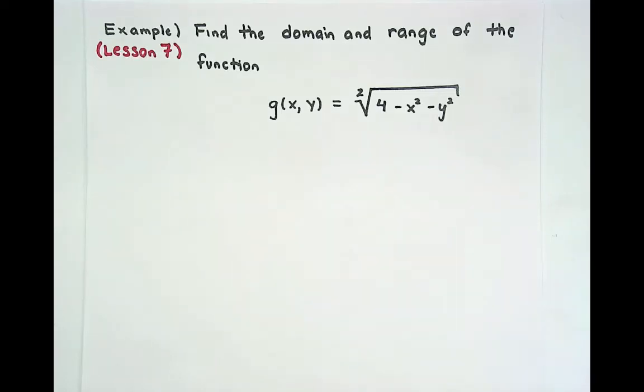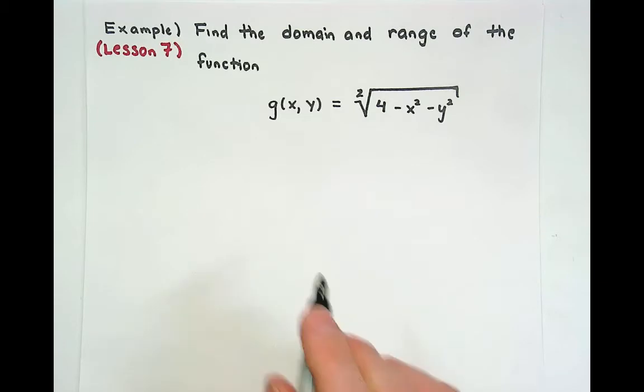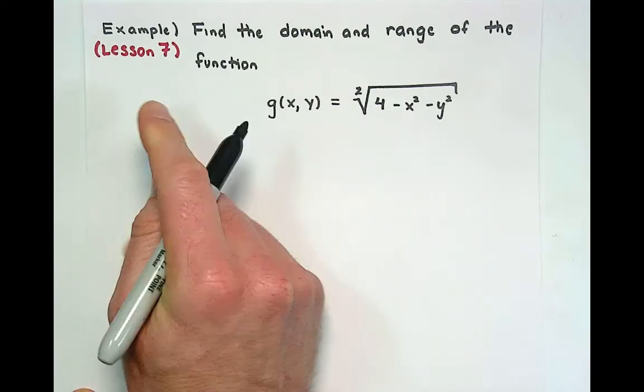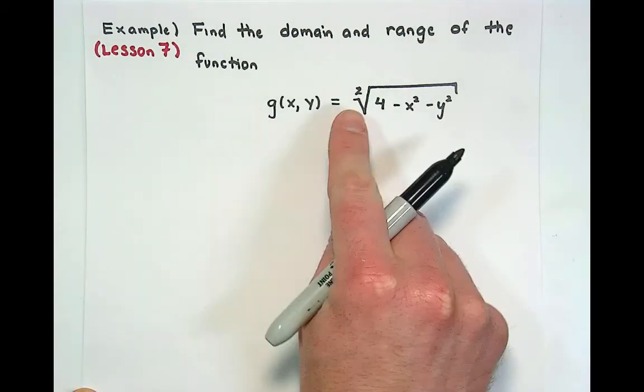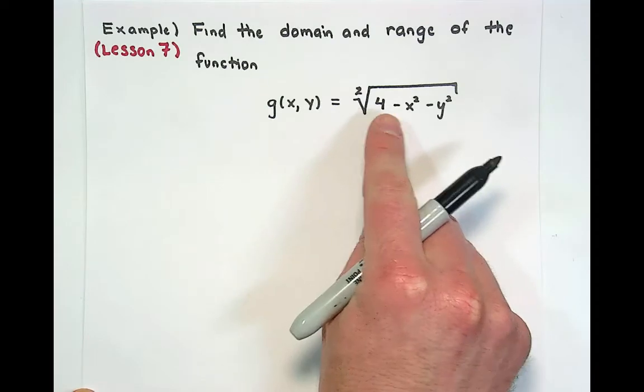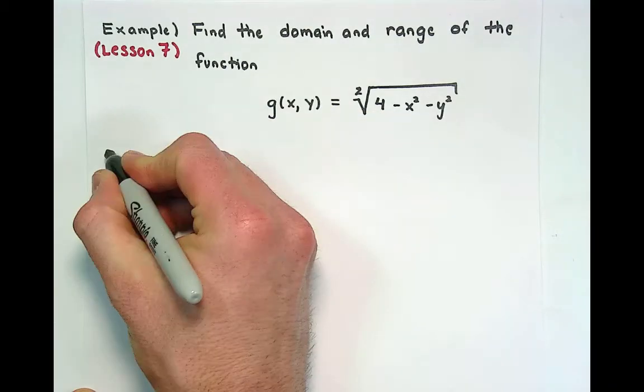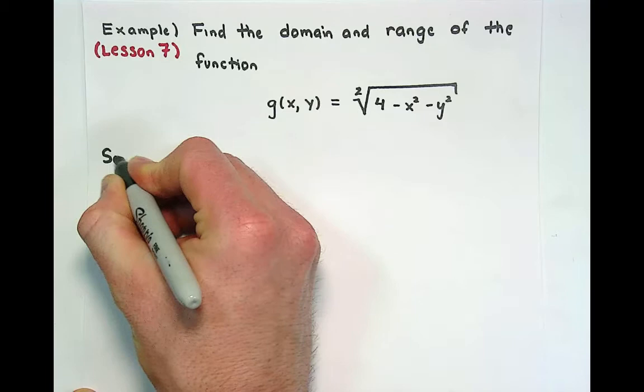Welcome back. In this example, we're going to analyze the domain and range of a given two-variable function. Here we have the function, the square root of 4 minus x squared minus y squared, and we're asked to analyze the domain and range.